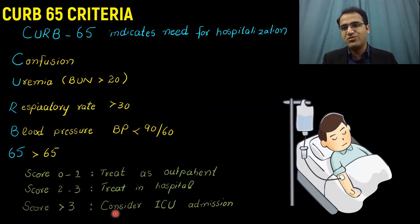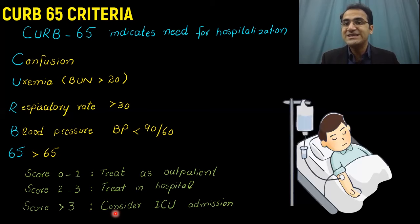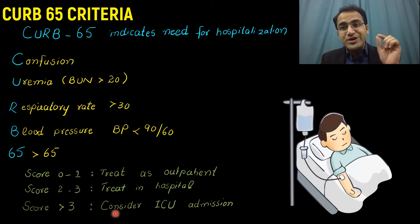There is also the Pneumonia Severity Index (PSI), which you can look up online. It is a longer criteria in which age is a very important factor. PSI is also a good scale to determine the severity of pneumonia and classify patients as mild, moderate, or severe for appropriate treatment.